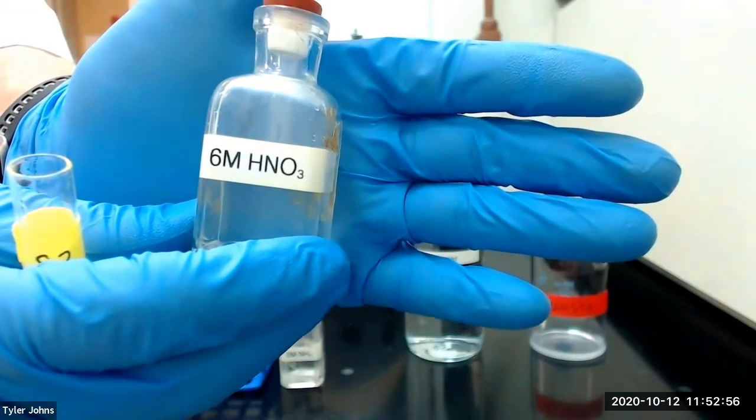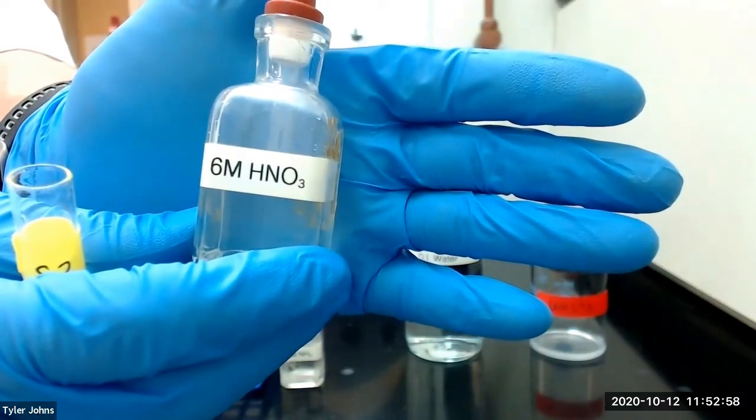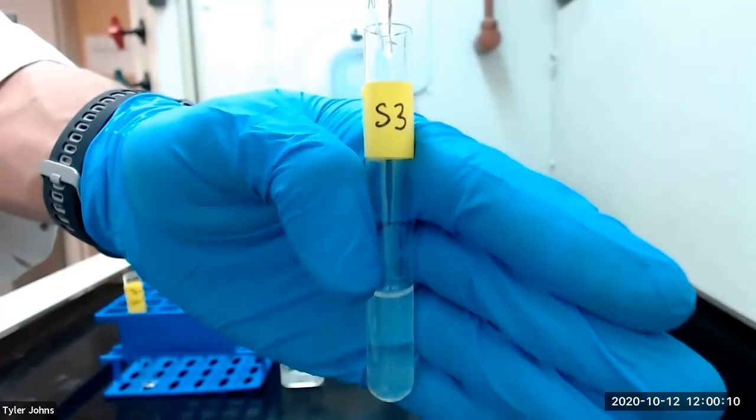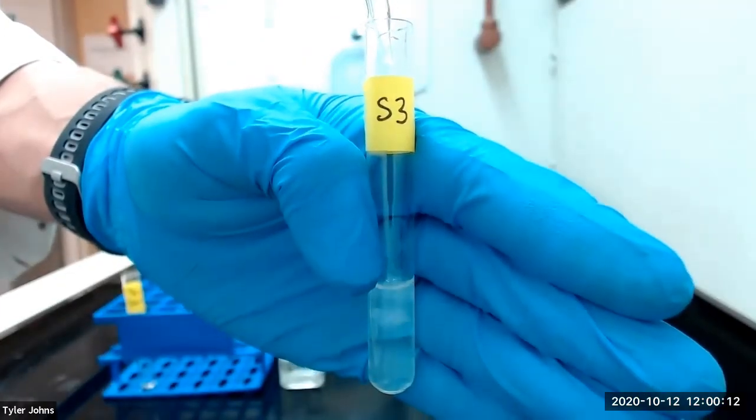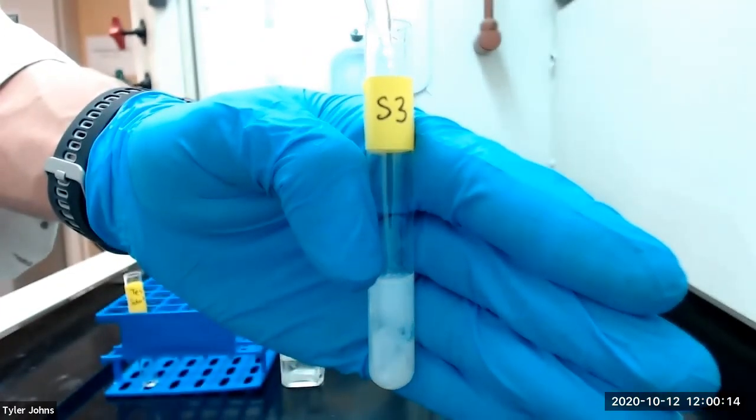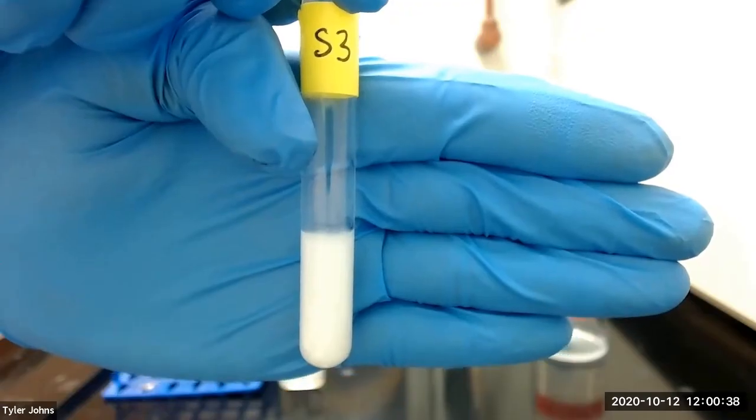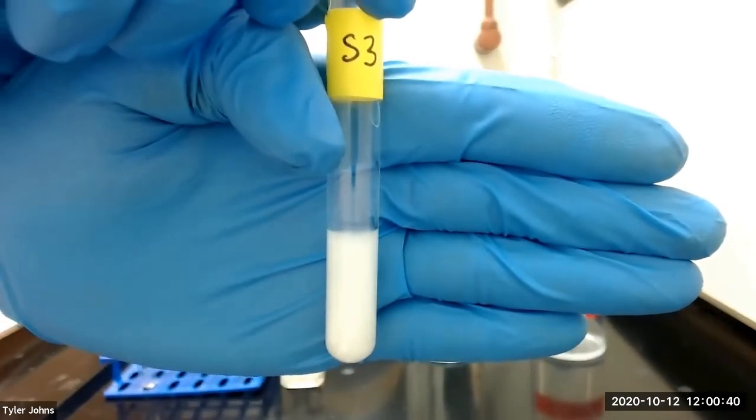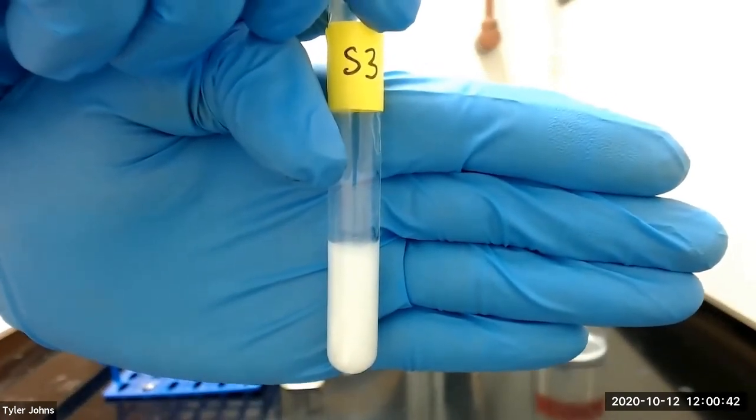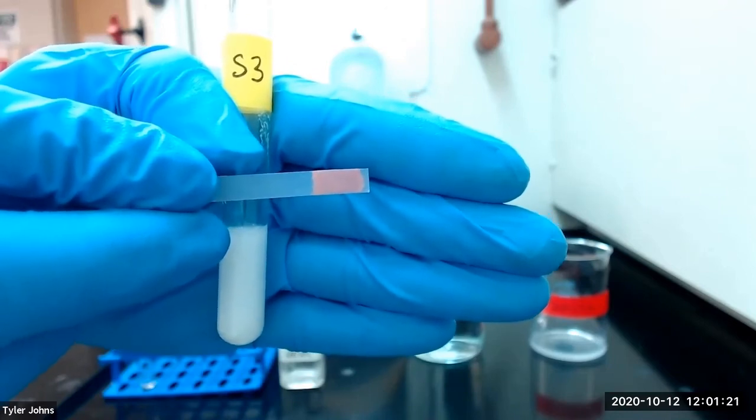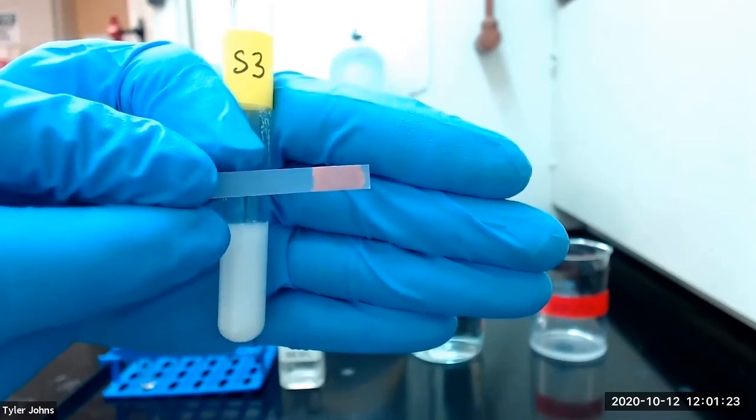The formation of a white precipitate confirms the presence of silver ion. We can see that our solution is now acidic as a blue piece of litmus paper has turned red.